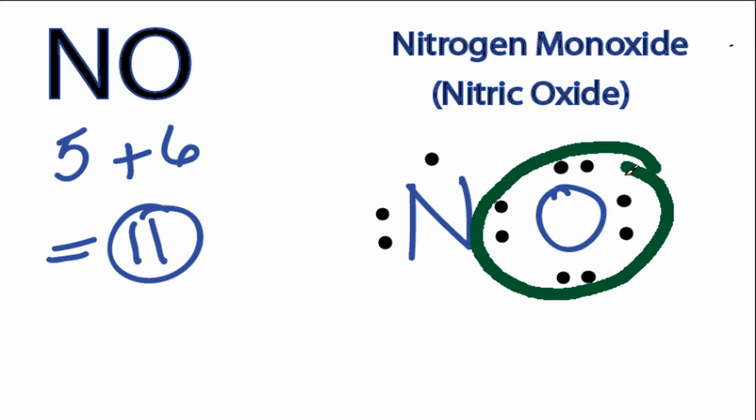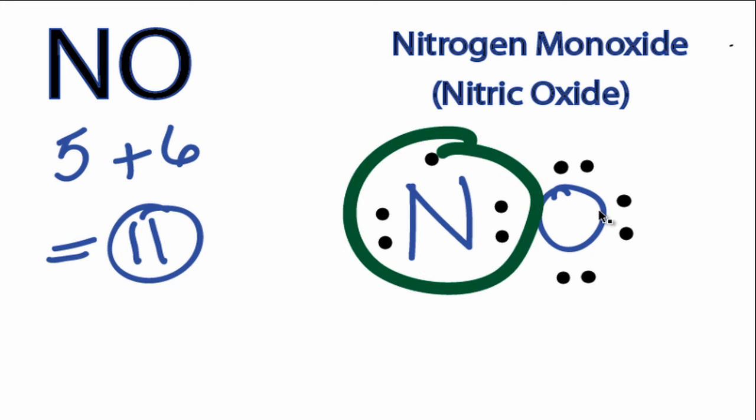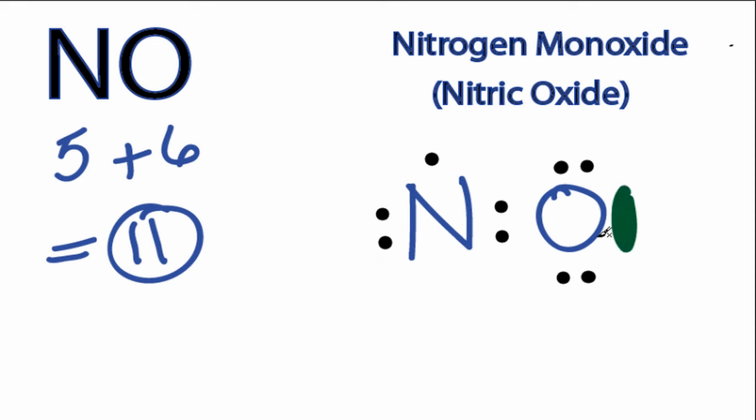So oxygen has 8 valence electrons. Nitrogen only has 5. So we can move these two here and share them, and that still gives us 8 around the oxygen, and the nitrogen has 7. We've used 11 valence electrons. This is probably the best that we can do.